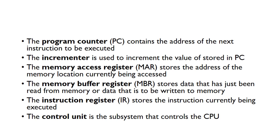The program counter contains the address of the next instruction to be executed, and the incrementer is used to increment the value stored in the program counter. At the beginning, the program counter would be zero, so we fetch instruction zero, then the incrementer increases that to one, then we fetch instruction one, two, three, and so on. The memory address register stores the address of the memory location currently being accessed. The memory buffer register stores data just read from memory or data about to be written to memory. The instruction register stores the instruction currently being executed, and the control unit is the subsystem that controls the processing side of the CPU.